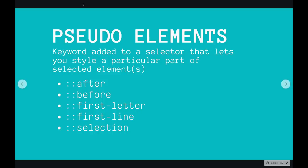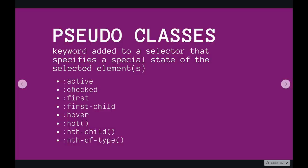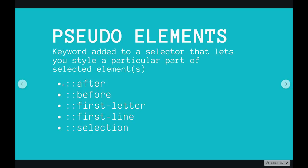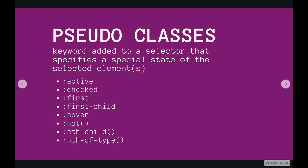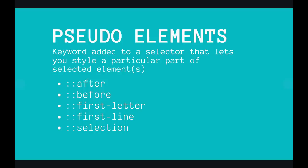Then we have pseudo-elements — similar to pseudo-classes in that they're add-ons to an existing selector, but with two key differences. First, they use two colons (::) instead of one, though most browsers are forgiving about this. Second, pseudo-elements allow us to style a particular part or portion of an element. Pseudo-classes are about states — hover, checked, focused, visited — while pseudo-elements let us style things like the first line, the first letter, or selected text.